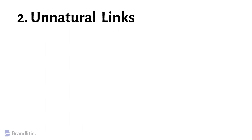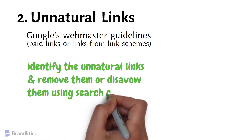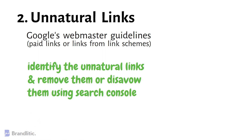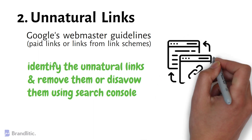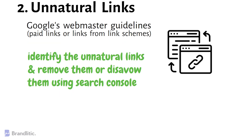The second manual action is Unnatural Links, which refers to links that violate Google's webmaster guidelines, such as paid links or links from link schemes. To fix this penalty, you need to identify the unnatural links and remove them or disavow them using Search Console. You should also make sure to follow Google's guidelines when building any new backlinks to your site.